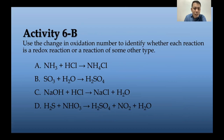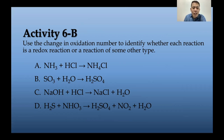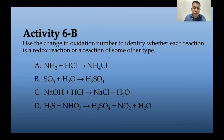For Activity 6B: use the change in oxidation number to identify whether each reaction is a redox reaction or a reaction of some other type. If there is no change in oxidation number, it is not a redox reaction. However, if you identify it as a redox reaction, also identify the element oxidized, the element reduced, the oxidizing agent, and the reducing agent.